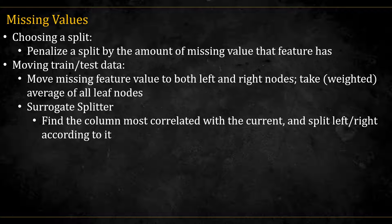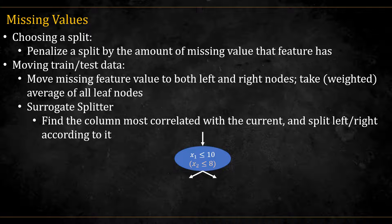Another option is to use a surrogate splitter. In this approach, we find a column which is most correlated with the current x feature, in the sense that we can find a split that will split the data almost identically to the original split. And so we move the observation with missing value, left or right, according to the surrogate split. Note that this does not replace the original split. For example, if the node is split by x1 less than or equal to 10, this is still the split for all the observations without missing values. We only use the surrogate split of x2 less than or equal to 8 for observations that don't have x1 values.